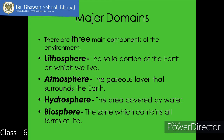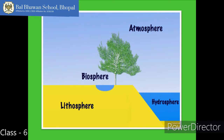We all know that the Earth is the only planet to have life on it. Therefore, the surface of the Earth is a complex zone, and it can be divided into three main portions: lithosphere, atmosphere, and hydrosphere. The narrow zone where we find land, water, and air together is known as the biosphere.